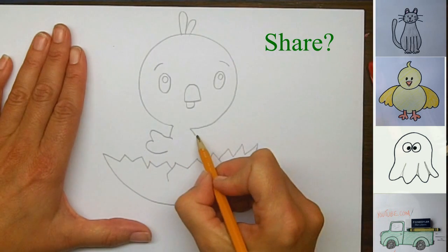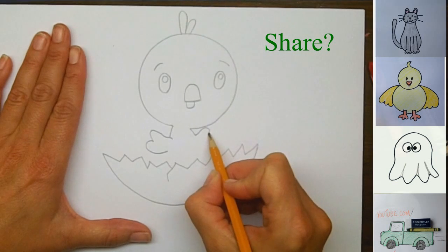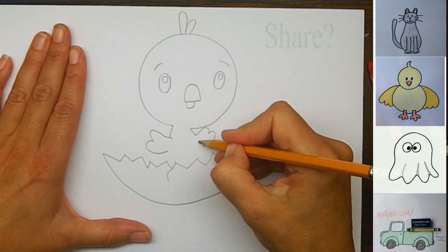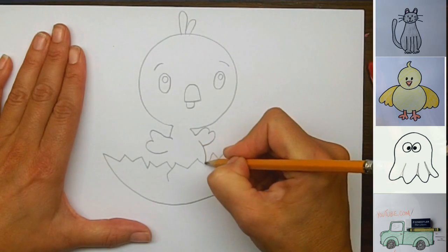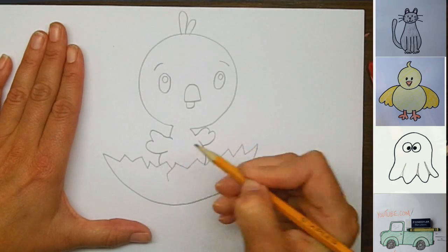One wing here, and his other wing is going to be right here. They kind of look like hearts a little bit. And then we'll have his belly going right down into the shell, like this. And same thing on the other side, just a little bit of his belly showing.